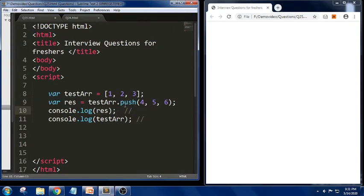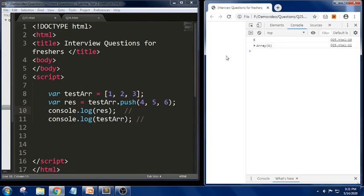The push method returns a number of how many elements are present in the array, whereas testArr will return all the elements. First one is 6, that is line number 10, and the next one is the array elements 1, 2, 3, 4, 5, 6. Thank you.